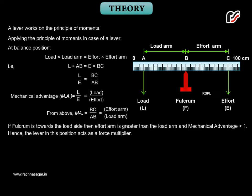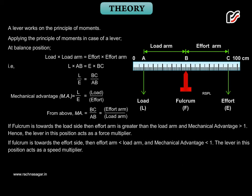If fulcrum is towards the effort side, then effort arm lesser than load arm and MA, mechanical advantage, lesser than 1. The lever in this position acts as a speed multiplier. Velocity ratio VR of a lever is given as VR is equal to BC upon AB, which is equal to effort arm upon load arm.